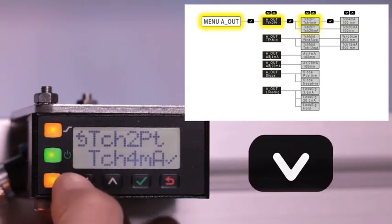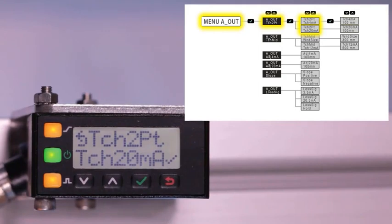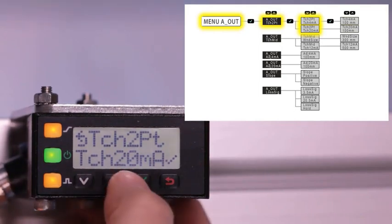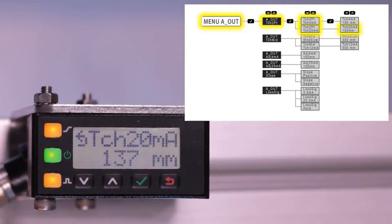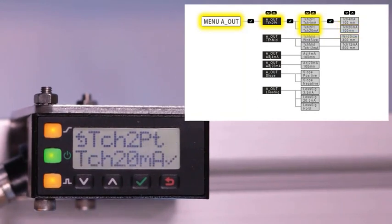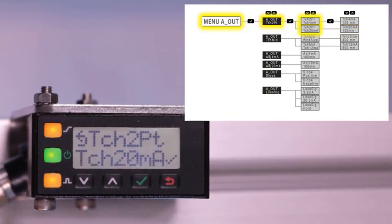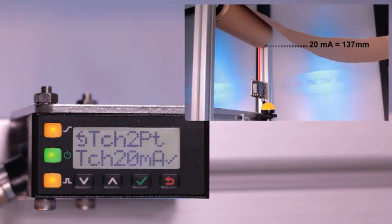Click down to teach 20 milliamp. Present a target, click enter, and the sensor will automatically teach the 20 milliamp point based on the position of the outer diameter of this roll. After a successful teach, the sensor will flash the value taught. So the 20 milliamp point is now located at 137 millimeters.